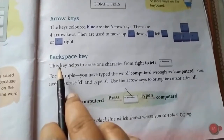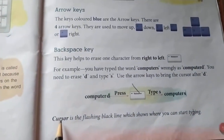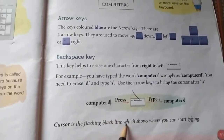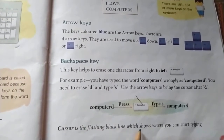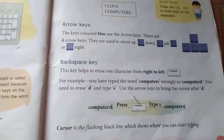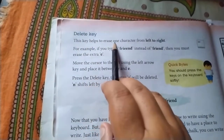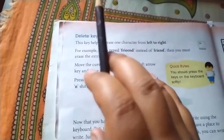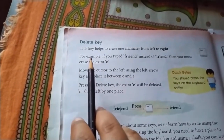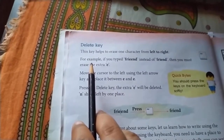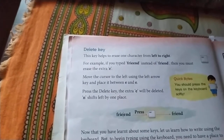The backspace key helps to erase one character from left to right. The cursor is the flashing black line which shows where you can start typing.